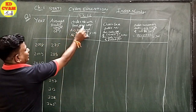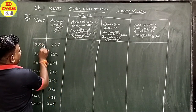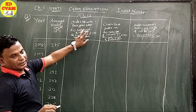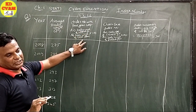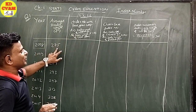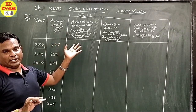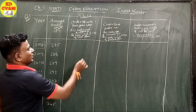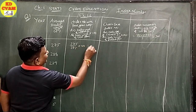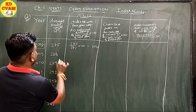Let's start. Index number with the base year 2008 — toh 2008 humara base year ho jayega. Average formula kya hai? Average daily wage of the current year upon the fixed base year into 100. Jo humne fix kiya hai, base year 2008, woh 275 hai. Toh pehle year mein hum 275 upon 275 into 100, so that will give 100.